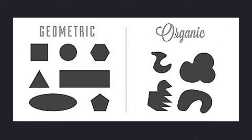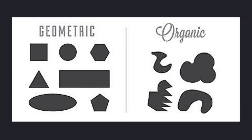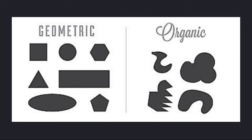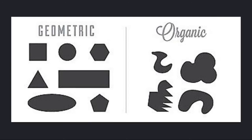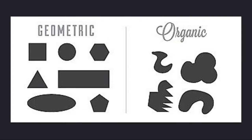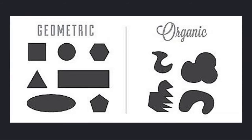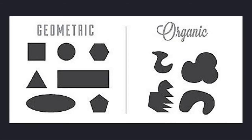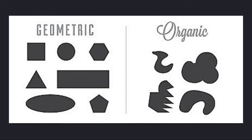Two shape families in art are the geometric and organic shape families. Geometric shapes have names and they're shapes we know and recognize. Organic shapes have unusual edges and are freeform.